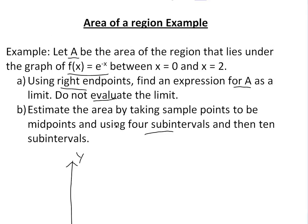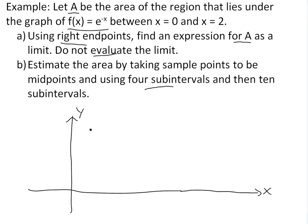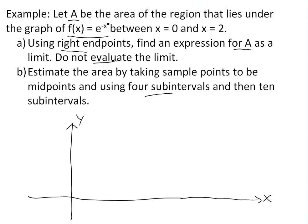So before we do these, let's just graph e to the negative x and see how it looks. If you put in 0, e to the 0 is just going to be 1, because anything to the power of 0 is 1. And then as it goes to infinity, e to the negative infinity approaches 0, so you're going to graph it and it's going to look something like this.